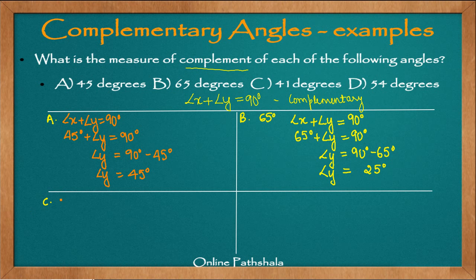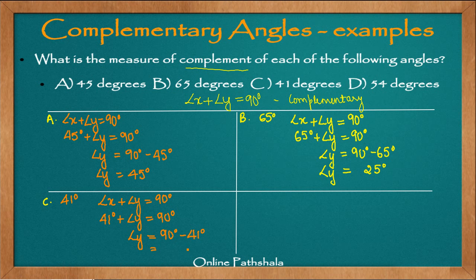Now let us look at part c, where we have 41 degrees. Using the criterion angle x plus angle y equals 90 degrees: 41 degrees plus angle y equals 90 degrees. Transposing 41 degrees to the other side gives angle y equals 90 minus 41. Solving: 10 minus 1 is 9, and 8 minus 4 is 4, so we get 49 degrees. The complement of 41 degrees is 49 degrees.